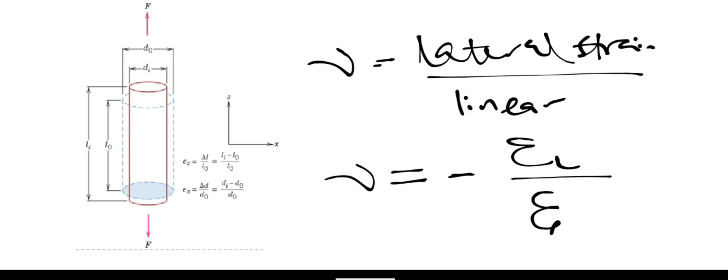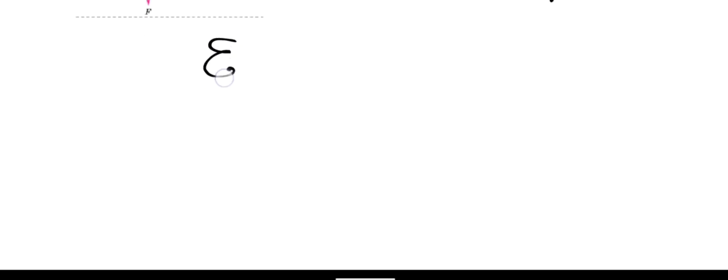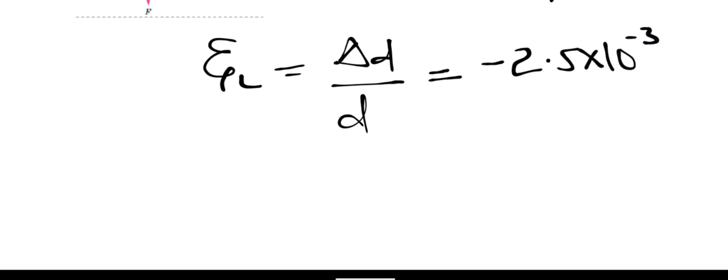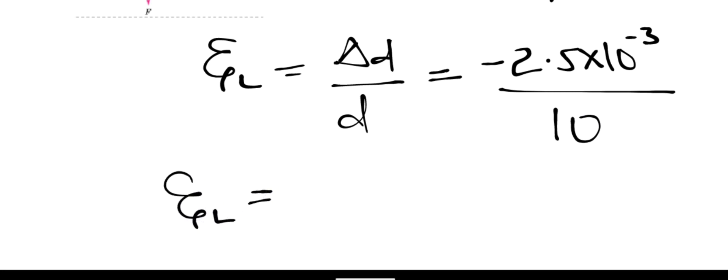We can determine the lateral strain first by saying: ε_L = change in diameter over original diameter. From the question, the change in diameter is −2.5 × 10⁻³ mm — negative because the diameter reduces as length increases — divided by the original diameter of 10 mm. Therefore, the lateral strain ε_L = −2.5 × 10⁻⁴.